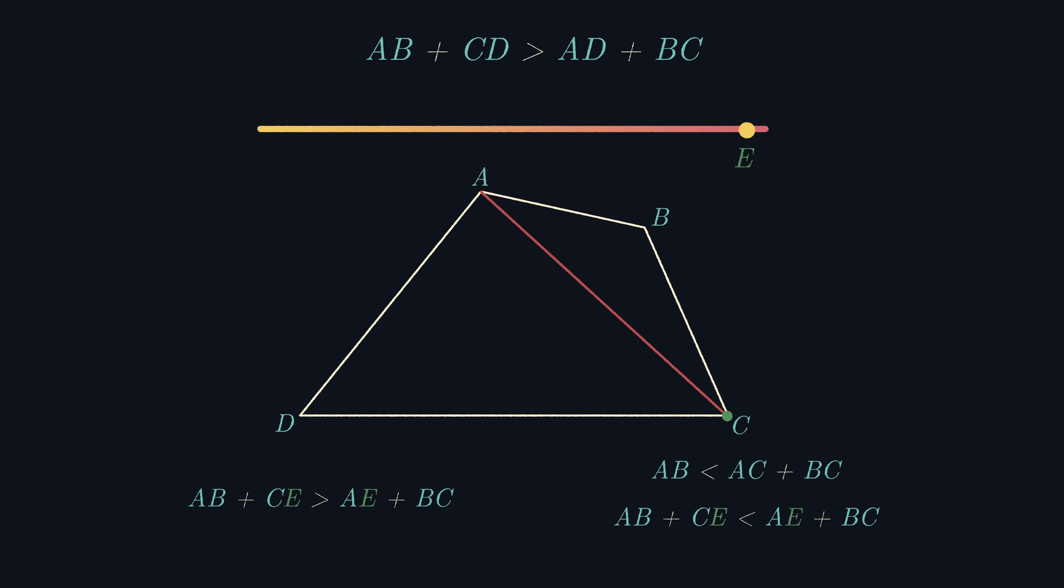But what does this all mean? Well, as we slide the point E along the line segment CD, we go from AB plus CE is greater than AE plus BC, to AB plus CE is less than AE plus BC. And hence, since these values vary continuously, the intermediate value theorem states that at some point between C and D, we must have had equality between AB plus CE and AE plus BC, which is exactly what we need for the quadrilateral ABCE to be tangential. And hence, this completes the problem.